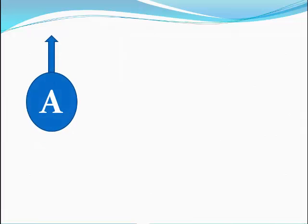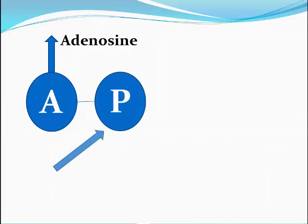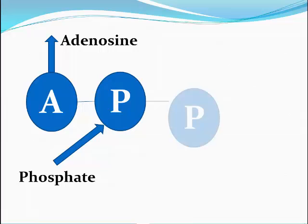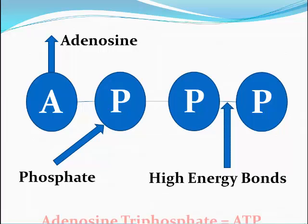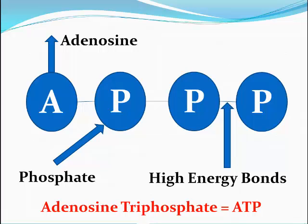Let's look at what adenosine triphosphate is made up of. First of all we have an adenosine molecule, then we have three phosphates. These phosphates are held together by high energy bonds, and that gives us adenosine triphosphate or ATP. ATP is fine to use in exams or with any work you do. So there's the basic structure of ATP.